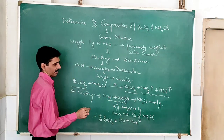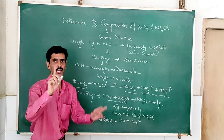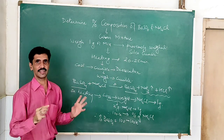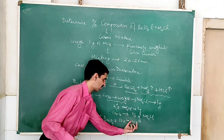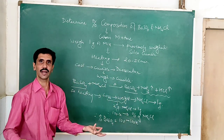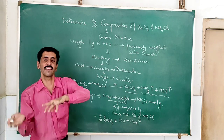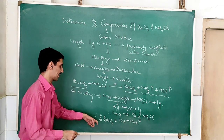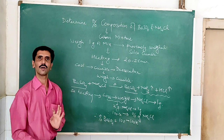Because we are very sure that the mixture contains only barium sulfate and ammonium chloride. So 100X is ammonium chloride, and if you subtract that from 100, you get the percentage of barium sulfate.